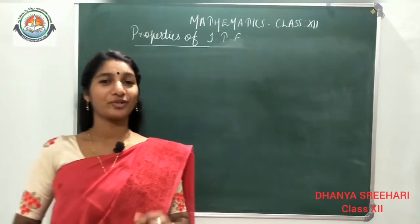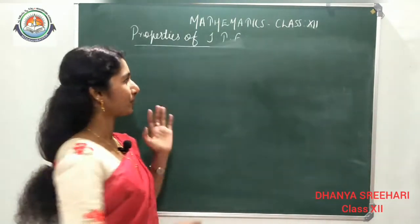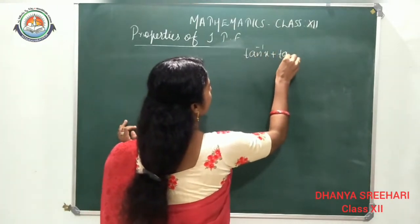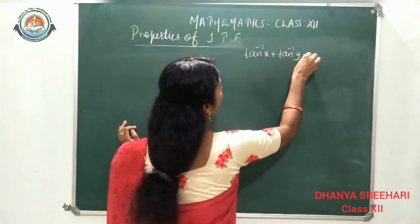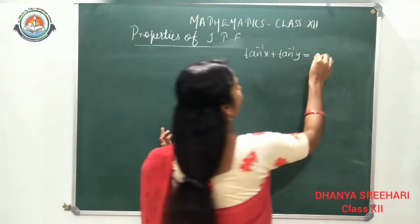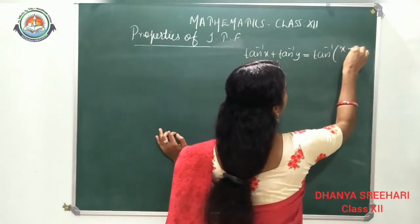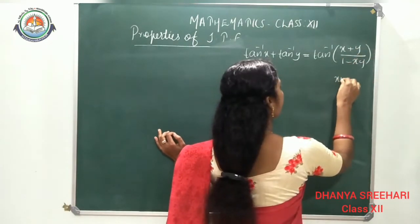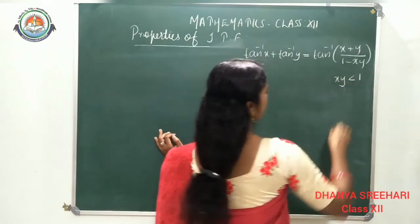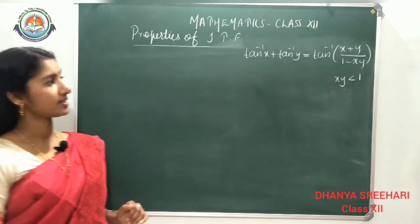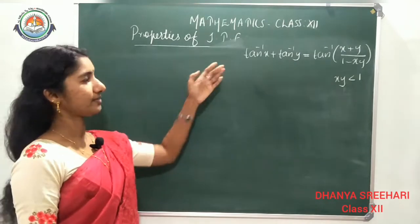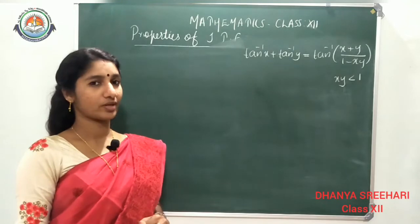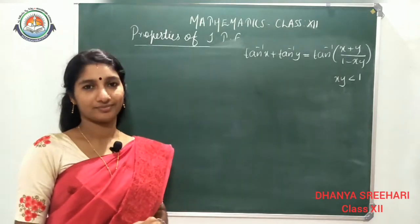The next is a very important property: tan⁻¹(x) + tan⁻¹(y) = tan⁻¹((x + y)/(1 − xy)), with the condition xy < 1. This property can only be applied when the product of x and y is less than 1.